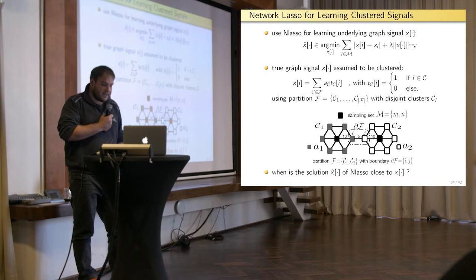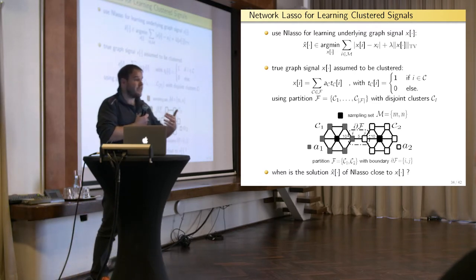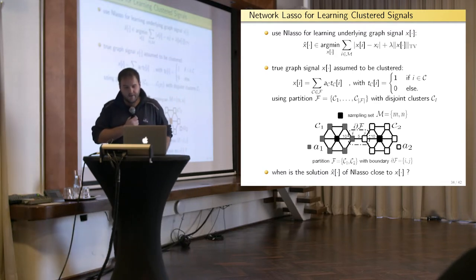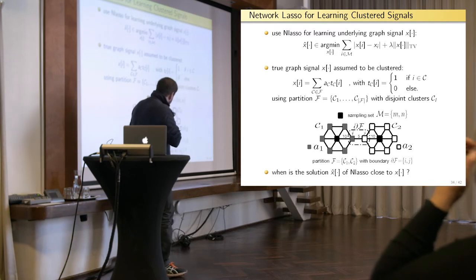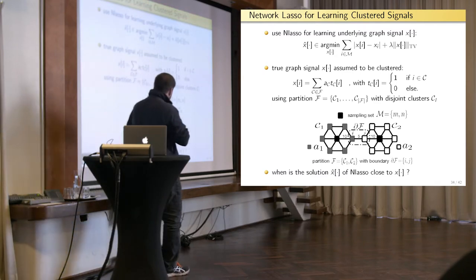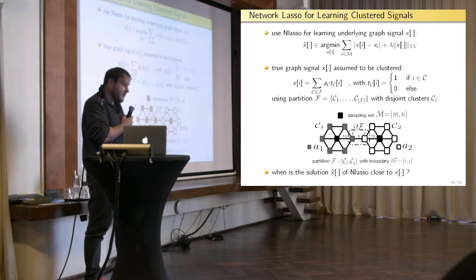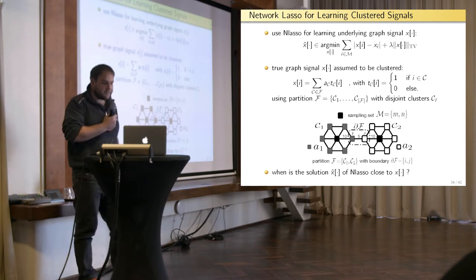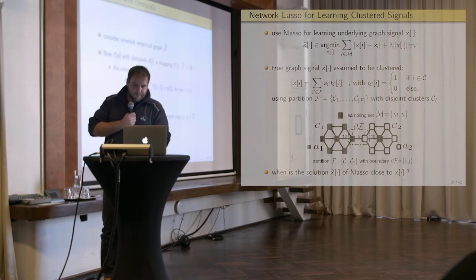And such optimization problems can be dealt with efficiently with modern convex optimization methods, as I told. One of those class of methods is called proximal methods. And we worked out this proximal method for the network lasso. So we can implement this learning strategy or the learning algorithm efficiently. But, of course, one important question is, how well or how accurate does the learned labeling resemble the true underlying labeling? So when does it work at all? When does this network lasso deliver a good solution? And for this, to answer this question, we applied in a recent line of work, compressed sensing theory.